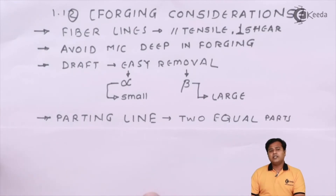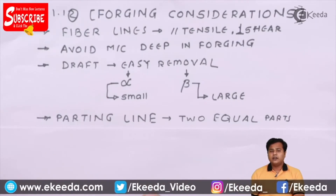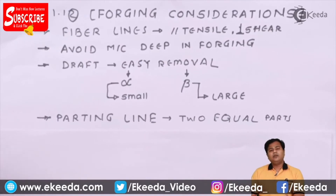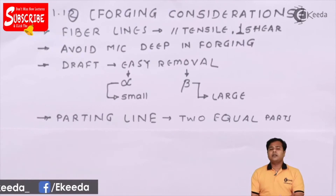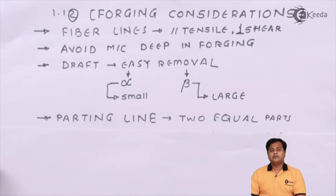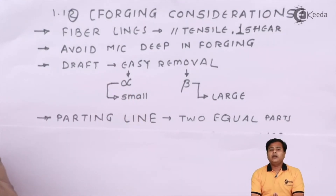These considerations are done especially for the dies and the forging material — we have to take care of them while we design the dies or while we design the forging procedure. The next consideration is the parting line. During forging, we have two different segments or die cavities. We pour the material and then combine or club them together. The section which comes into contact with each other when clubbing is highlighted by the parting line.